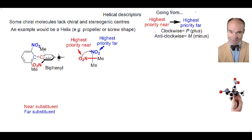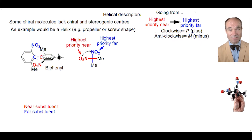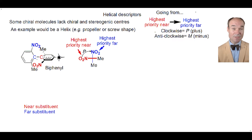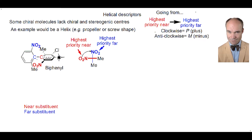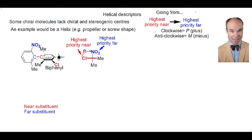Moving from the nearer nitro to the farther nitro gives a clockwise movement, and thus the descriptor is P. You look for substituents as close to the key carbon-carbon bond that creates the axis as possible that will give you an answer. In this example, we don't have to go as far out as the chlorine to obtain an answer, so we don't. In another case, we do have to look to the chlorine to get an answer.